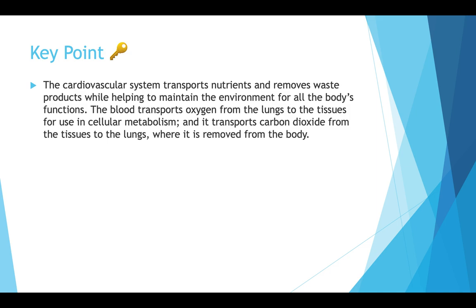To summarize: the cardiovascular system transports nutrients and removes waste while helping maintain the body's environment — homeostasis at rest or a steady state during aerobic exercise. Blood helps transport oxygen from the lungs to the tissues via cellular metabolism, and the heart also helps transport CO2 from the tissues to the lungs where it's removed. When we get into energy systems, we'll explore that further.